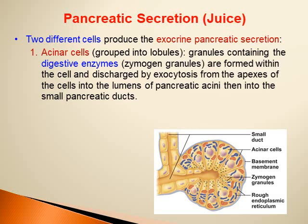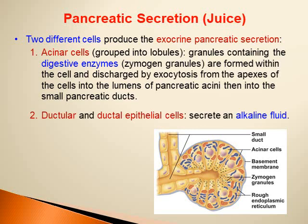The apical part of the acinar cells contains the zymogen granules, which are formed within the cell and discharged by exocytosis from the apices of the cells into the lumens of the pancreatic acini, then into the small pancreatic ducts.